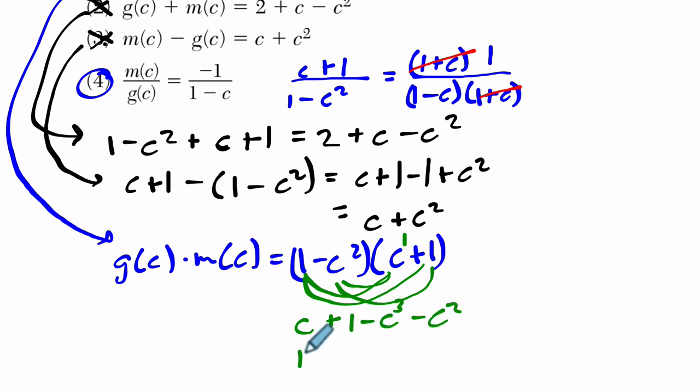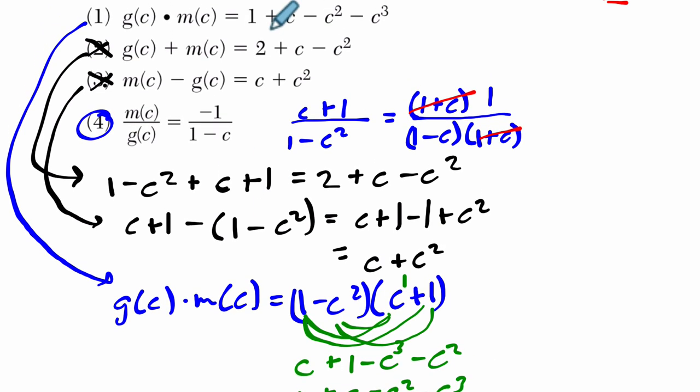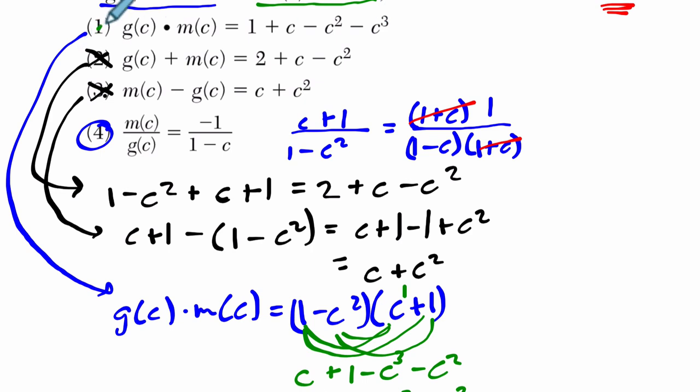So we have here 1, and then I'll go up in order of exponents, because that's what I see here, plus c, minus c squared minus c cubed, which is exactly what they have here. That's solved correctly. So we're crossing it off because we're looking for the incorrect choice.